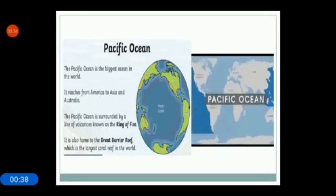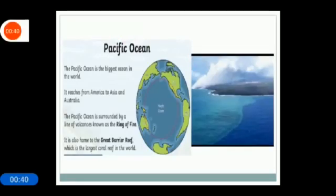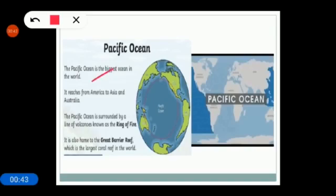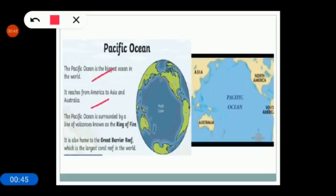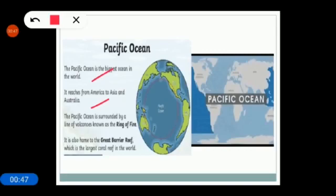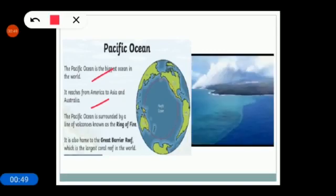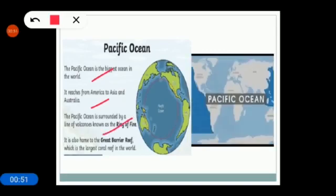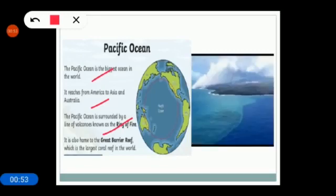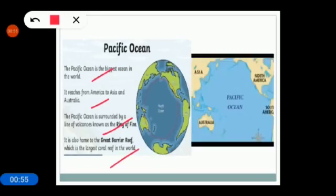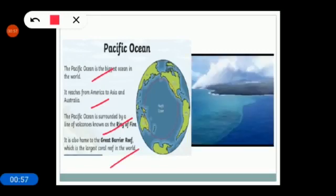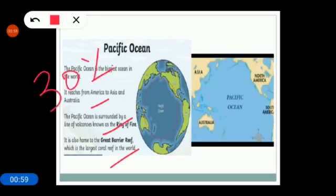First, Pacific Ocean. Pacific Ocean is the biggest ocean in the world. It reaches from America to Asia and Australia. The Pacific Ocean is surrounded by lines of volcano known as the Ring of Fire. It is also home to Great Barrier Reef which is the largest coral reef in the world. You know that it covers more than 30% of the earth's surface.